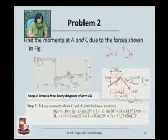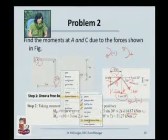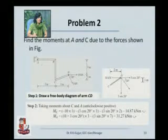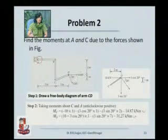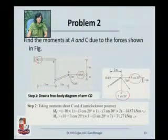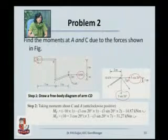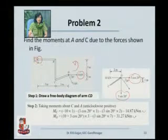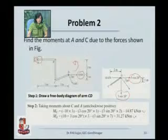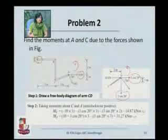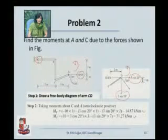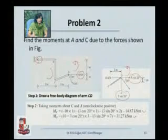Let us check out point A and see how these forces are now going to create the moment about point A. You have the 10 kN force, the horizontal component of the 3 kN force, and the vertical component of the 3 kN force. The 10 kN force is going to rotate the entire body about point A in the anticlockwise direction. The 3 cos 20 horizontal component is also going to rotate the body about A in the anticlockwise direction. The vertical component, 3 sin 20, is going to cause a clockwise rotation.